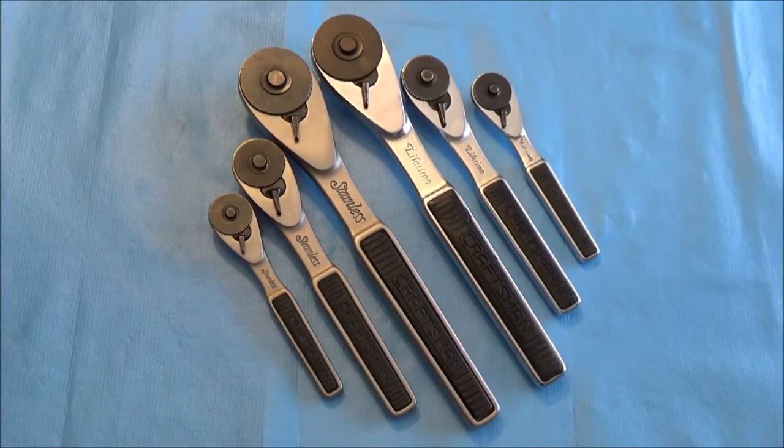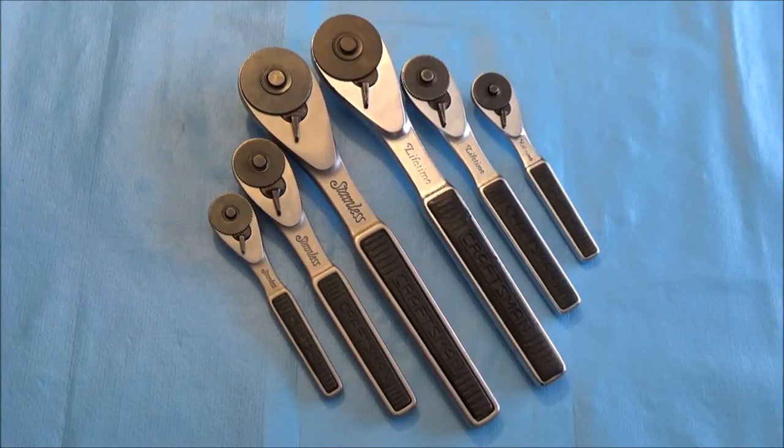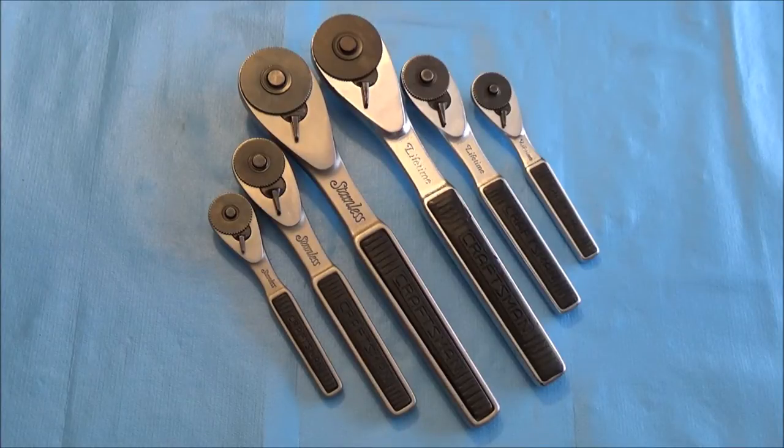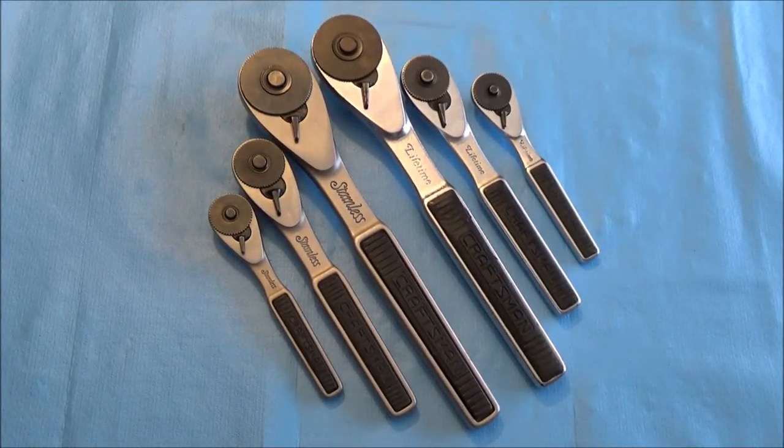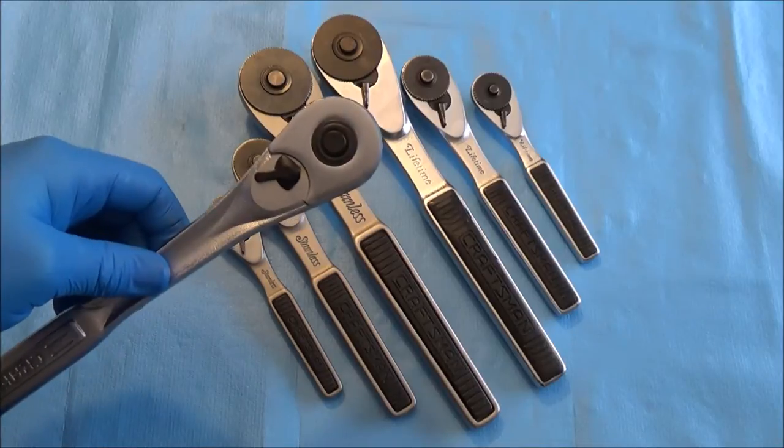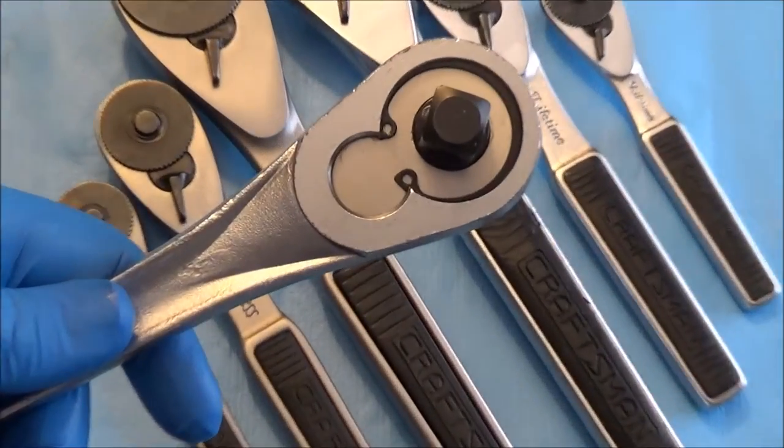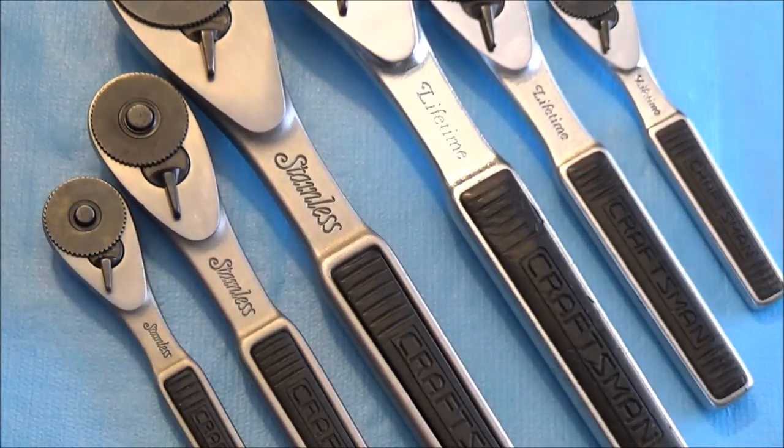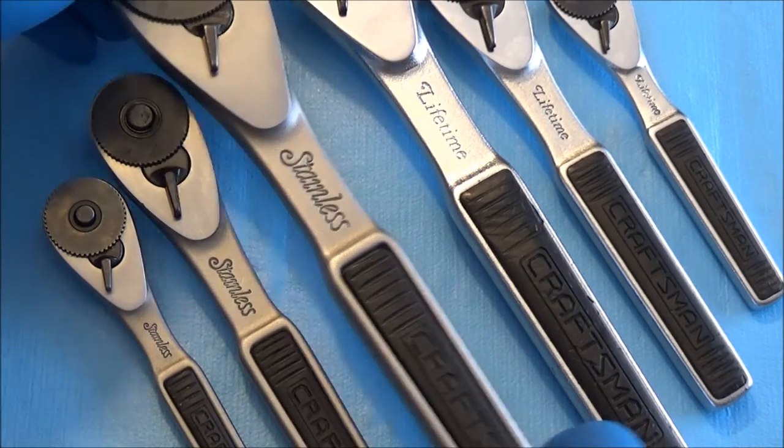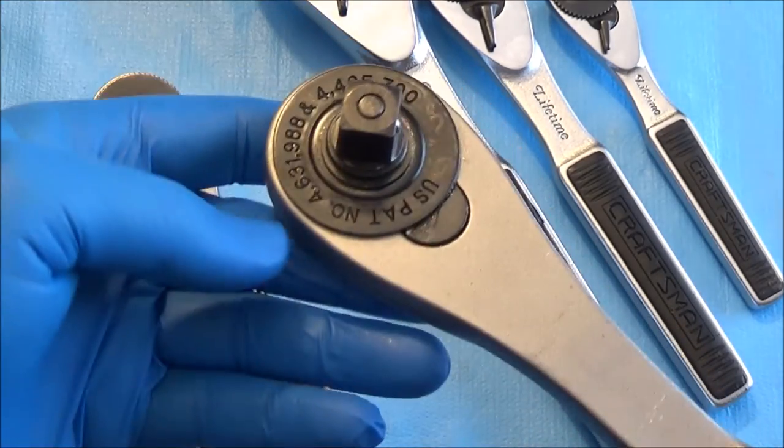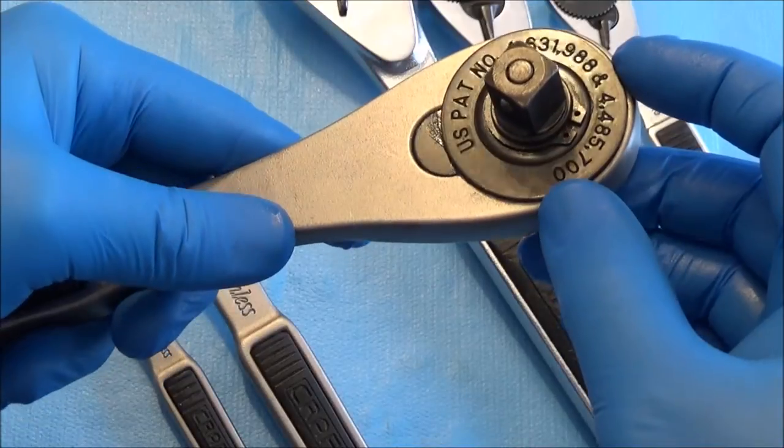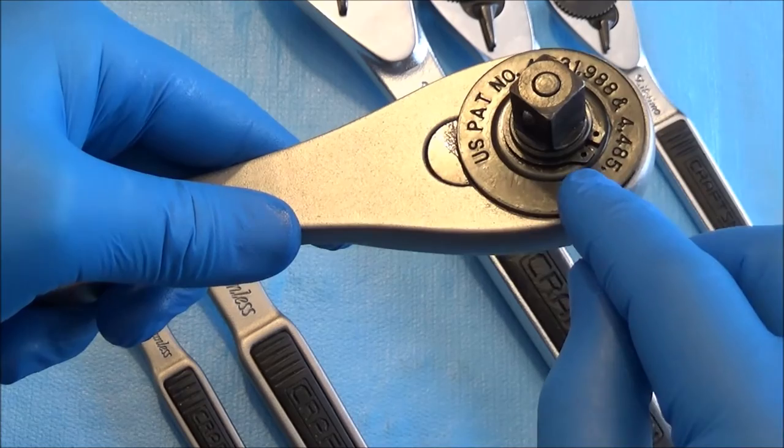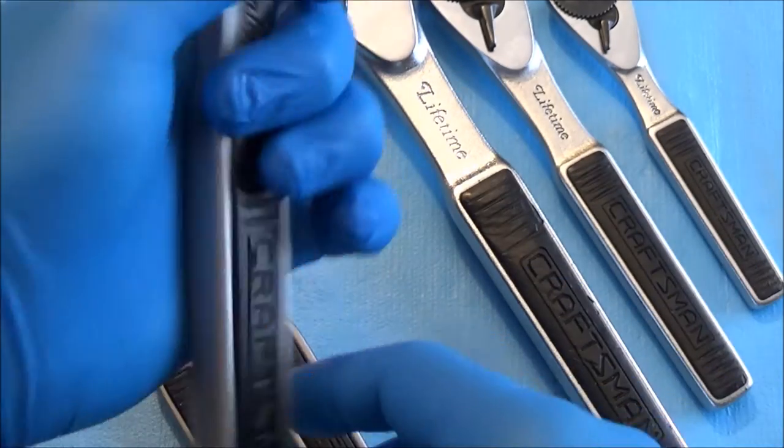The snap ring philosophy on these is different than say this guy. You have what's called an internal snap ring that you compress inward, whereas these stainless and lifetimes have what's called an external snap ring. So instead of compressing it you pull outward. These are a little flimsy in terms of their strength so you have to be a little ginger with them.